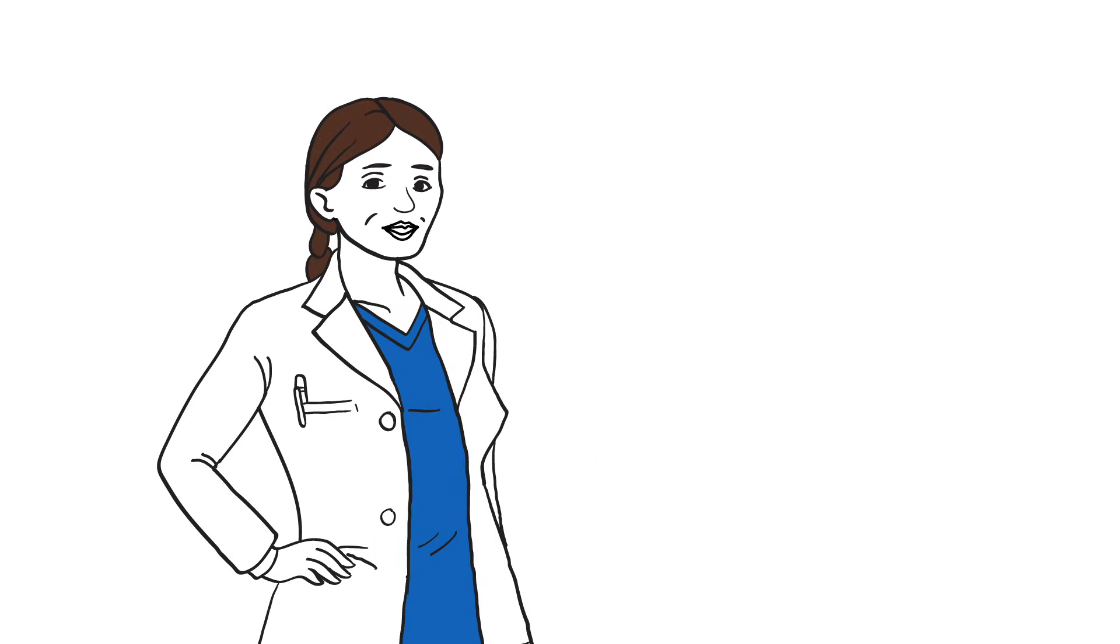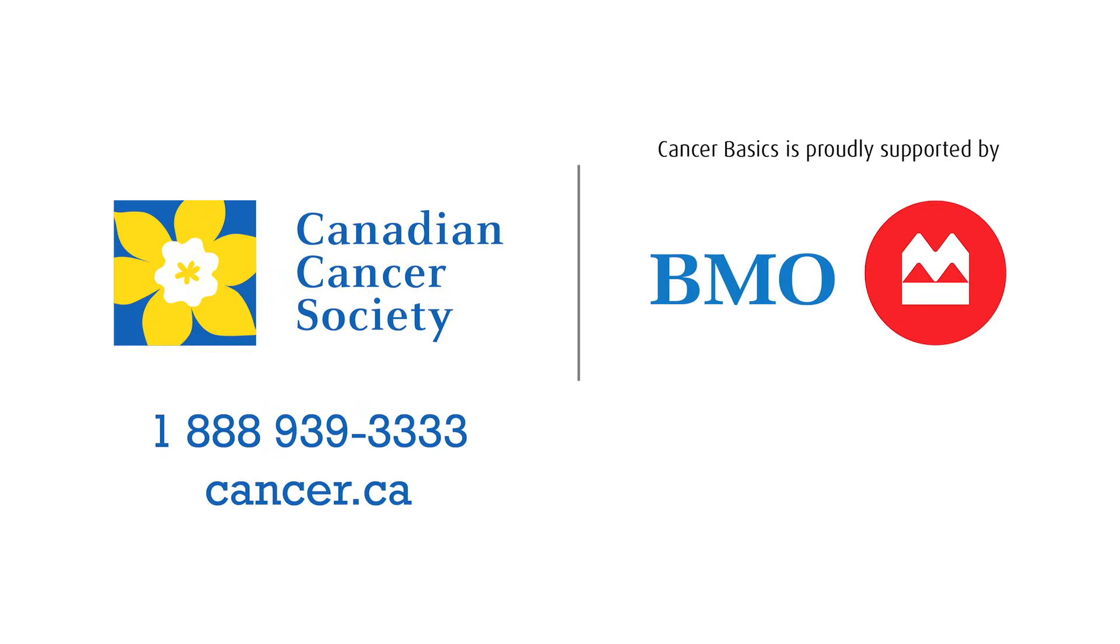Cancers are named after the part of the body where they start. For example, cancer that starts in the bladder but spreads to the lung is called bladder cancer with lung metastases.